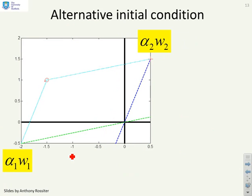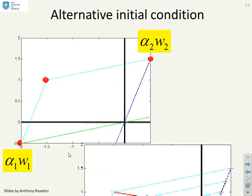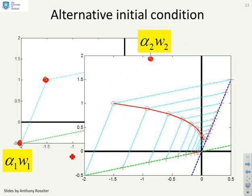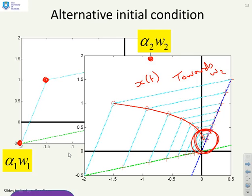Starting from a different initial condition on the same example, the same behaviour is observed. The initial condition is again decomposed into α1*w1 and α2*w2. Running forward in time, the state again tends toward the second eigenvector direction — the one with the slowest convergence — as we get closer and closer to the origin. These are the sorts of insights that phase planes provide.